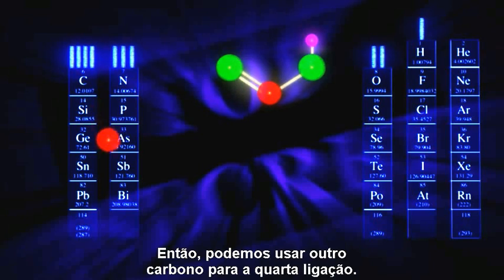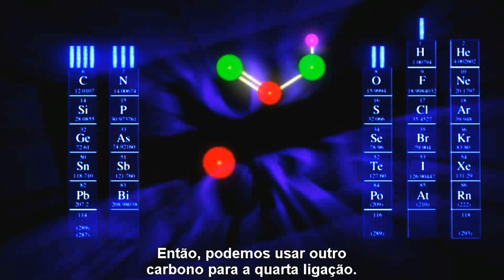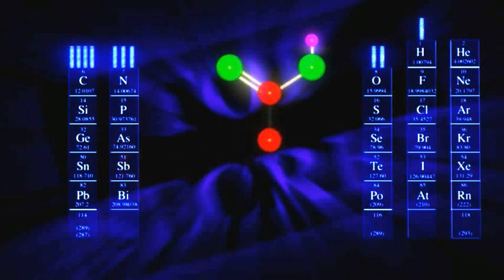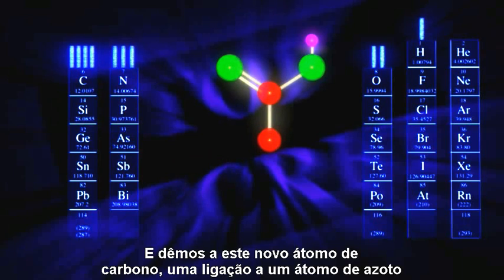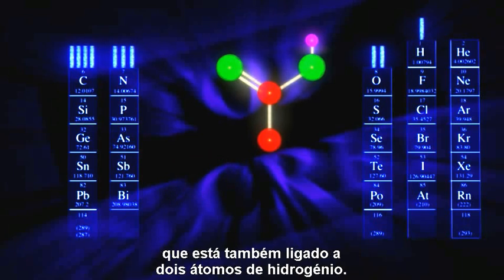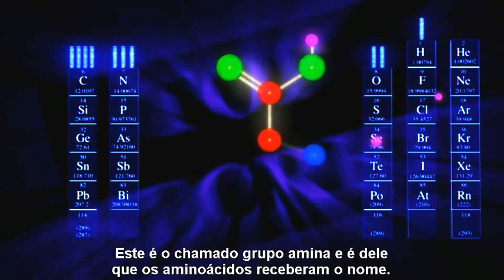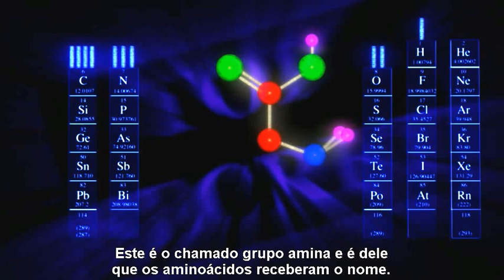So let's give it another carbon for its fourth bond, and let's give this new carbon atom a bond to a nitrogen atom that is also attached to two hydrogen atoms. This is called an amino group, and is where amino acids get their name.